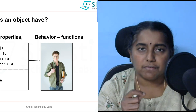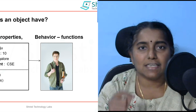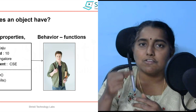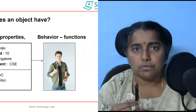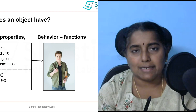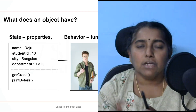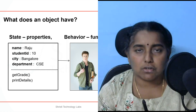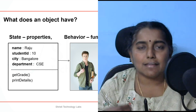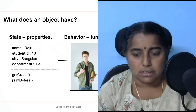When you say behavior, we talk about the functionalities that a particular object can perform. If I take this pen as an example, with the pen, what can we do? We can write, we can draw. So the methods can be: can write, can draw. Similarly, if you take a student object, what are the functionalities? Get grades, print hobbies, get details — these are the functionalities that you can perform with a student object.